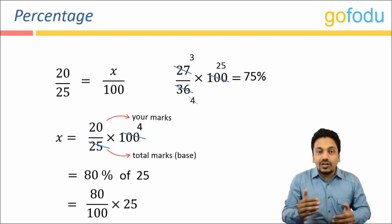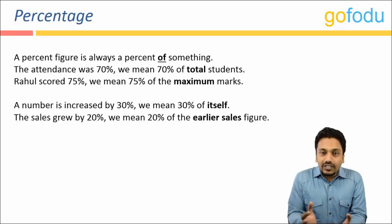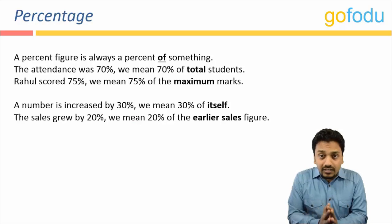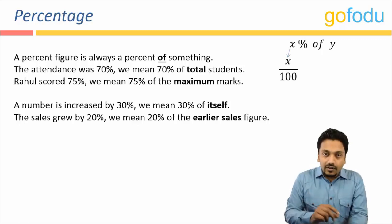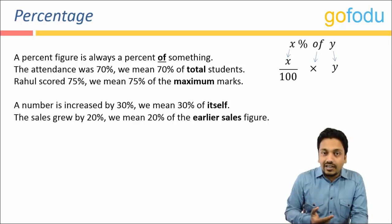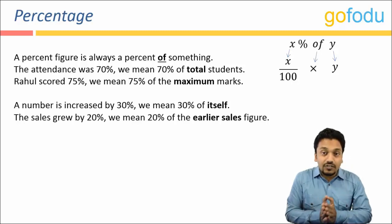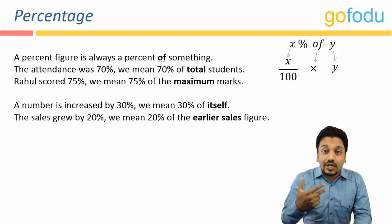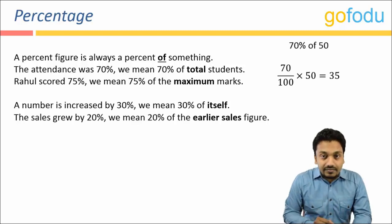So percentages are always of something. X percent of Y means X divided by hundred, multiplied by Y. For example, if the attendance of a class is seventy percent, that means seventy percent of the total number of students enrolled. If the total number of students is fifty, then the attendance would be seventy percent of fifty, which comes out to be thirty-five.